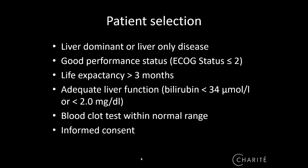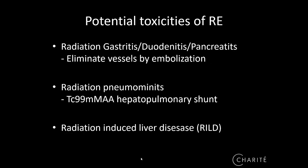An informed consent has to be obtained. In discussing consent, we must address potential toxicities of radioembolization, which include gastritis, duodenitis, and pancreatitis due to non-target embolization to other organs. We try to avoid that by eliminating vessels in an evaluation run. Another risk is radiation pneumonitis due to hepatopulmonary shunting, which is why we perform a scintigraphy scan with technetium-marked albumin before embolization. Of course, radiation-induced liver disease is also a risk.